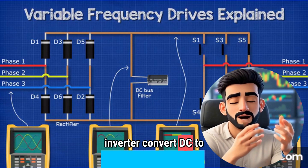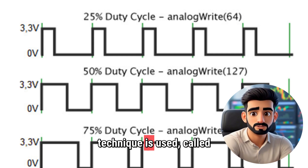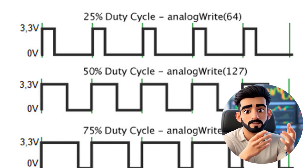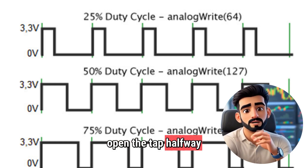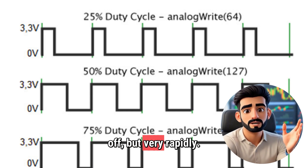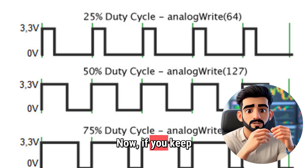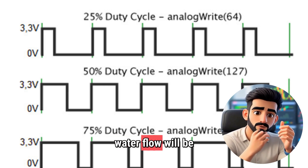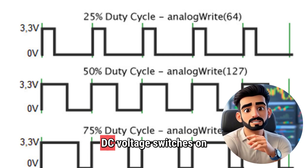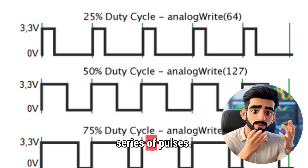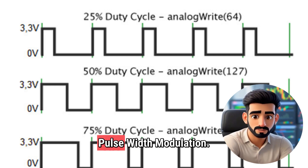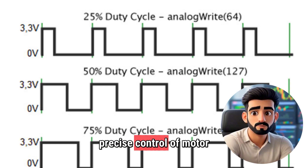But how does the inverter convert DC to controlled AC? Here, a very popular technique is used called Pulse Width Modulation, or PWM. Let's understand it in simple language. Imagine you have a water pipe with a tap and you need to control the water flow. One way is to open the tap halfway. PWM works differently: it turns the tap fully on and fully off, but very rapidly — thousands of times per second. If you keep the tap on for more time and off for less, the average water flow will be higher; keep it on for less time and the average flow decreases. The inverter does exactly the same — it rapidly switches DC voltage on and off, creating a series of pulses. By adjusting the width of these pulses, that is the on-time, it controls the average voltage and frequency supplied to the motor. That's why it's called Pulse Width Modulation. With this technique, very precise control of motor speed and torque is achieved.